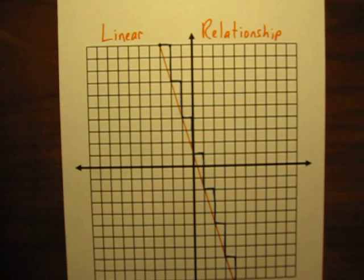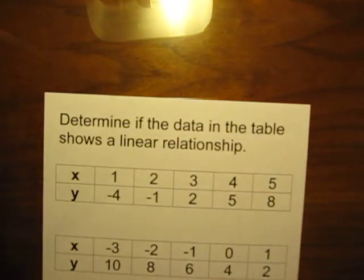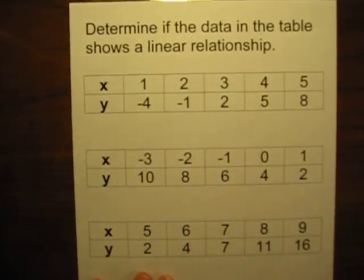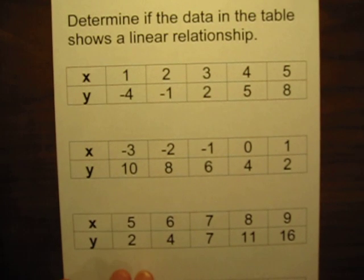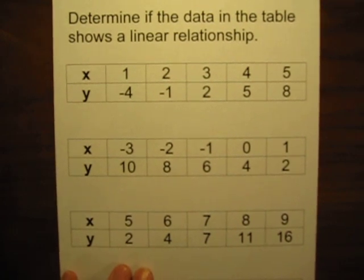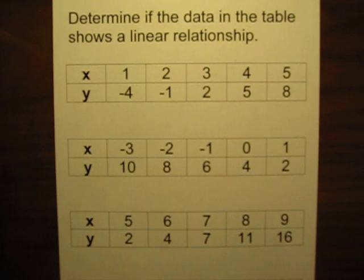It is maybe not as easy to see in a data table as it is on a graph, but in data tables we can see the same relationship. So here we want to decide which of these tables has that linear relationship — where it has a constant rate of change the whole way. Let's look at the first one.